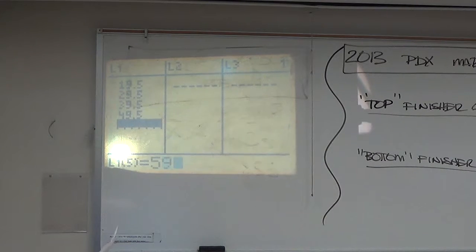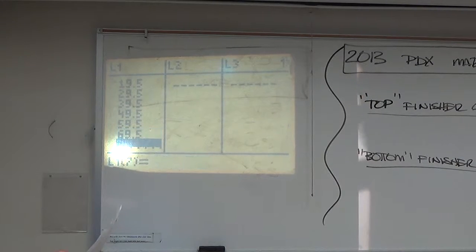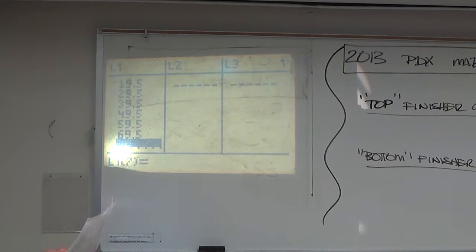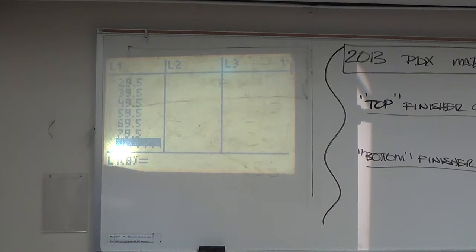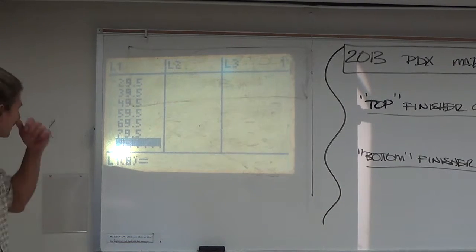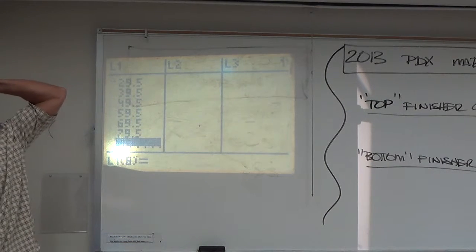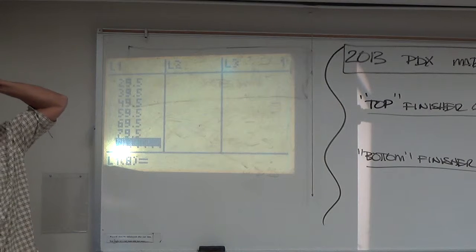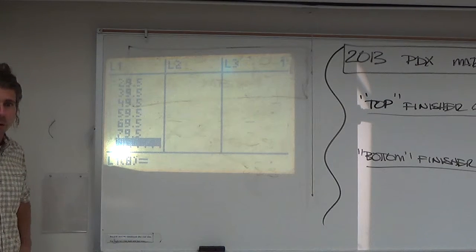We're down to half. 59 and a half. 69 and a half. And bless the people that are 75 to 84 running a marathon — they might make my knees work that long. That's our data all the way down.